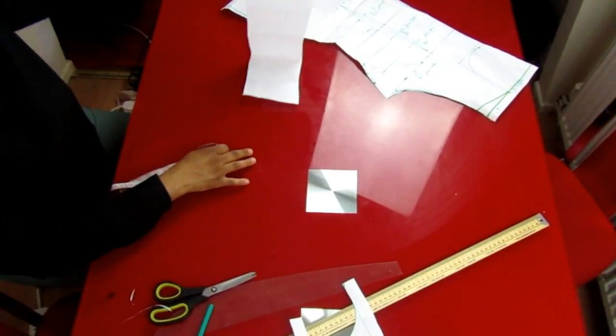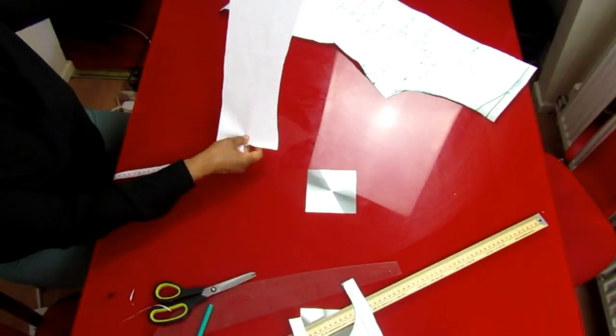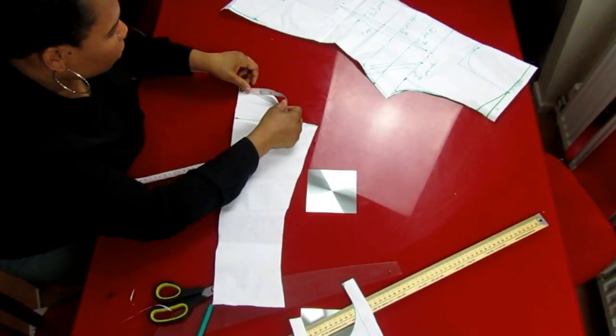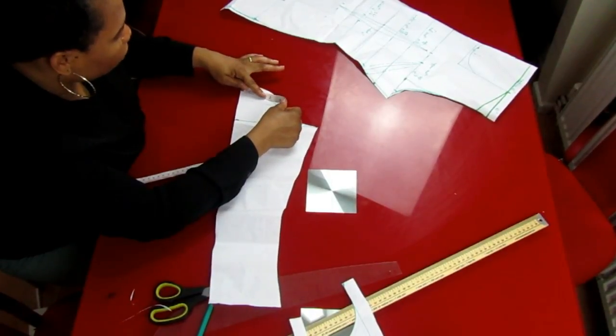So this is my sleeve. This is the sleeve, I've cut it out. This is how it should look. Now I'll measure the sleeve cap to see if it matches with my armhole.